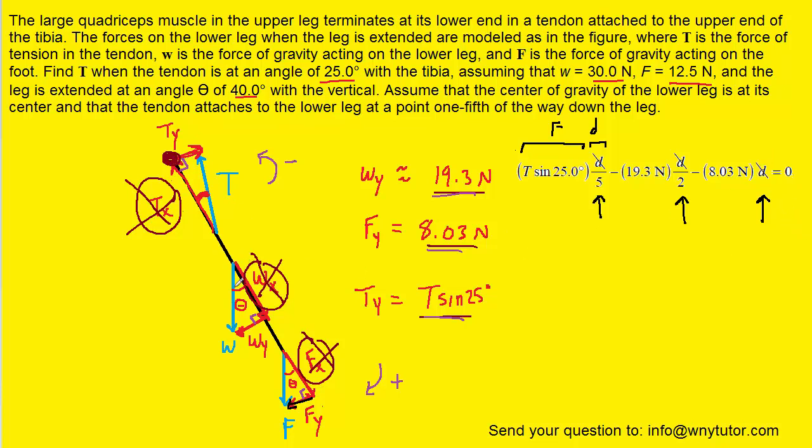The weight of the tibia acts at the geometric center, and so the distance from that force to the pivot would just be half of the length of the tibia, and that's why we've labeled d over 2. And then the question states that the tension force is acting one-fifth of the way down the leg, and that's why we've called that distance d over 5.